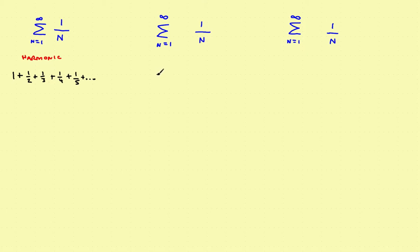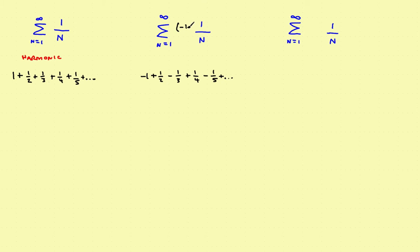Now suppose we want to get an alternating version. Let's start with negative one, then positive one-half, and every other term changes sign: negative one-third, positive one-fourth, negative one-fifth, and so on to infinity. The basic series is still one over n — it's just the fact that it alternates between terms. To make this alternate, the easiest way is to put what I call a switch: negative one raised to the n power.